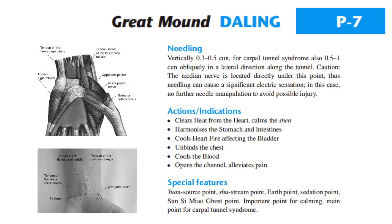Actions and indications of Pericardium 7: clears heat from the heart, calms the Shen, harmonizes the stomach and intestines, cools heart fire, affects the bladder, unbinds the chest, cools the blood, opens the channel, alleviates pain. Special features: Yuan source point, Shu-stream point, Earth point, sedation point, Sun Si Miao ghost point, important point for calming, main point for carpal tunnel syndrome.